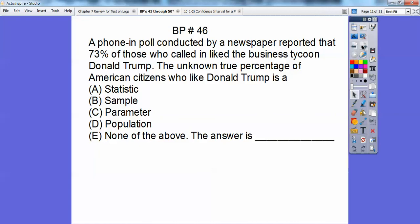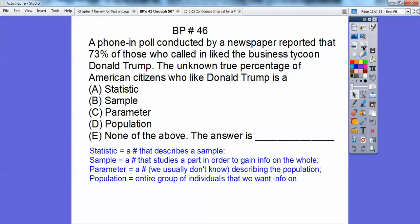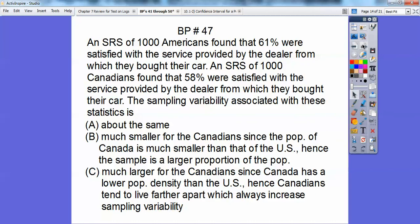A phone-in poll conducted by a newspaper reported that 73% of those who called in liked the business tycoon Donald Trump. The unknown true percentage of American citizens who like Donald Trump is, okay, so a statistic is just a number that describes a sample. A sample is studying a part in order to gain information on the whole. A parameter is a fixed number that we usually don't know that describes the population, and then the population is the entire group that we want to gain information about. So what does this describe? This describes the parameter, so it's going to be part C. The parameter is just some number that we don't know that describes our population. So this 73% is talking about a number that we don't know that describes our population.